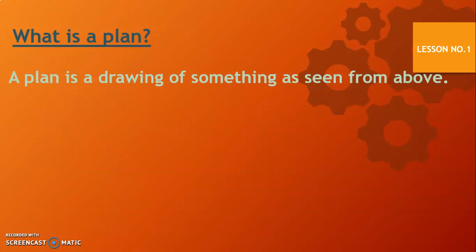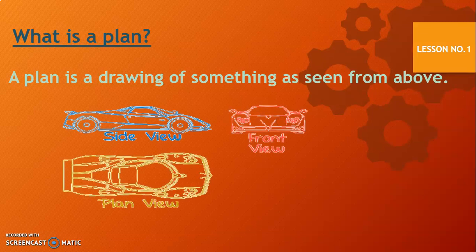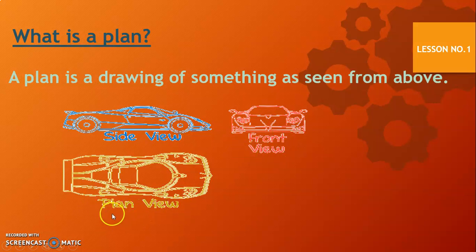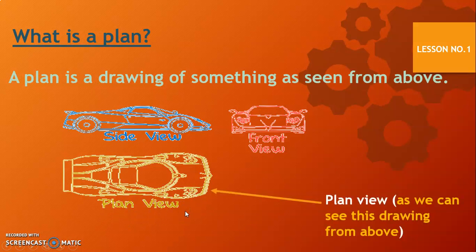A plan is a drawing of something as seen from above. For example, this is a drawing of a car — this is the side view of the car, this is the front view of the car, and this is the plan view. This is the plan view because we can see this drawing from above, and a plan is a drawing of something as seen from above.